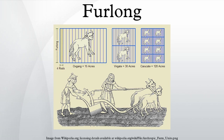An acre is an area that is one furlong long and one chain wide. For this reason, the furlong was once also called an acre's length, though in modern usage an area of one acre can be of any shape. The term furlong, or shot, was also used to describe a grouping of adjacent strips within an open field.